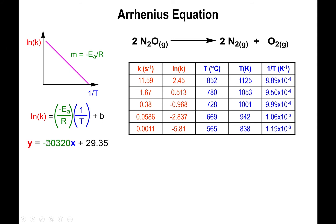If you plot ln of k versus 1 over T, you will get a line with a negative slope. From the slope you can extrapolate the activation energy by multiplying the slope by negative R.